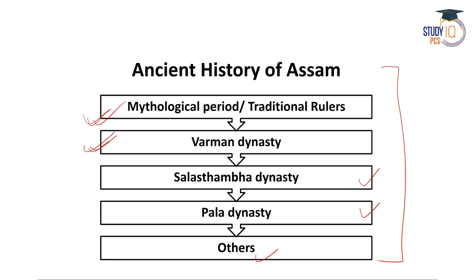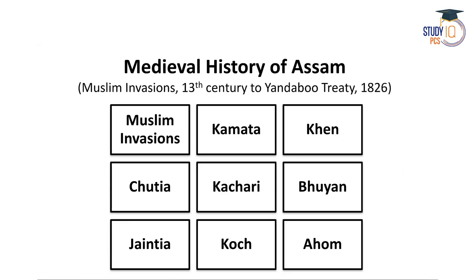In medieval history of Assam, I will cover the Muslim invasion of the 13th century up to the Treaty of Yandabu. I will discuss the Kamata kingdom, then the Koch dynasty, then the Sutia dynasty or Sutia kingdom — a very powerful kingdom in the eastern part of Assam — then the Kachari dynasty or Kachari kingdom, another very powerful kingdom in medieval Assam.